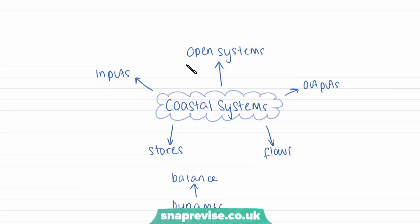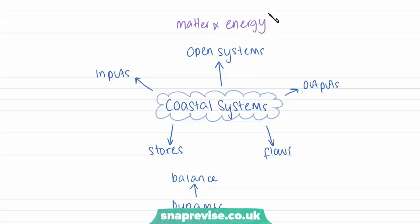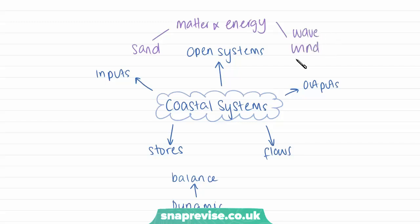Coastal systems are also open systems, and if you remember from my first video, open systems are systems where matter and energy can be transferred in and out of the system. For example, within a coastal system, matter would be things like sand and sediment, and energy is things like waves and wind. This leads us on to the inputs in coastal systems, which are things like wind energy, wave energy, tides, and sea currents.